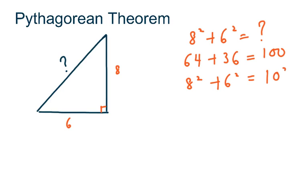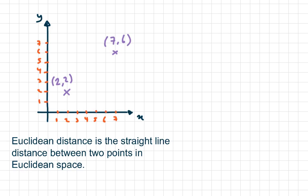We rewrite this as: 8 squared plus 6 squared equals 10 squared. What the Pythagorean theorem says is: let's call the sides a, b, and c — then a squared plus b squared equals c squared. With that refresher, let's see what happens when two points are given in Euclidean space.